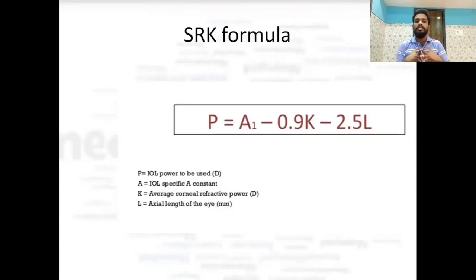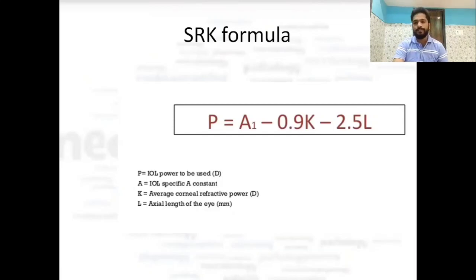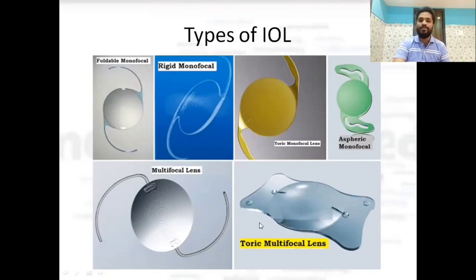The SRK formula is used to calculate the power of an IOL (intraocular lens) to be placed in a patient. The formula is: P = A1 − 0.9K − 2.5L, where A is the IOL-specific constant, K is the average corneal refractive power, and L is the axial length. Different IOL types include multifocal, toric, monofocal aspheric, monofocal toric, and monofocal lenses.